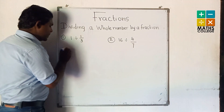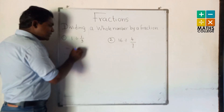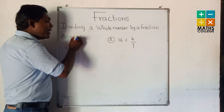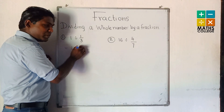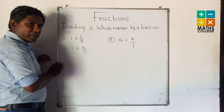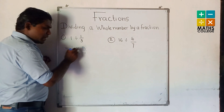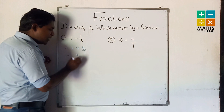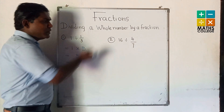First one: not change. This division, change to multiplication. Then the divided fraction — write as a reciprocal: 3 upon 1. Numerators multiply. 1 multiply 3 is 3 upon 1. The final answer is 3.